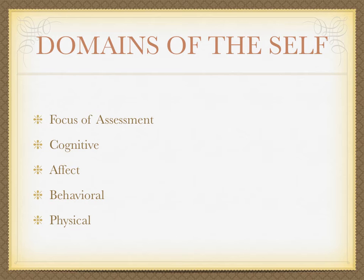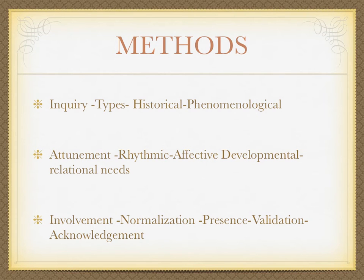We need to look at this in terms of a system — if you change the cognitive, or help the person become aware of cognitive processes which they need to change, that will have an effect on emotional, behavioural, and physical aspects within the whole self. In terms of methods, there are three major methods: inquiry, attunement, and involvement methodology.